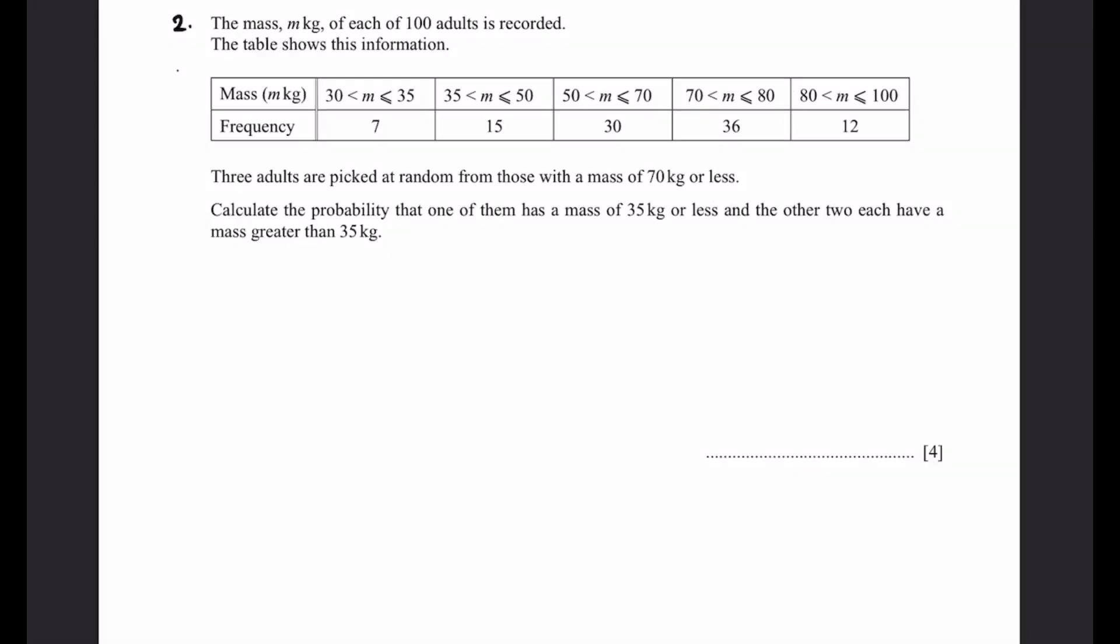Alright, so what are the two criteria which we have? First, is that 3 adults are picked at random from those with a mass of 70 kgs or less. This is very important. That means we only consider all the parts which are below 70 or equal to 70 kgs, which is what I've highlighted right there. Now, this frequency adds up to 52.